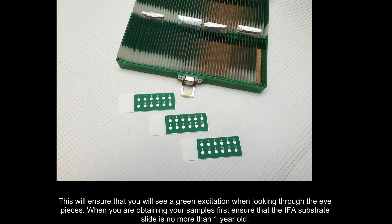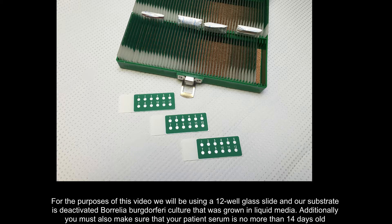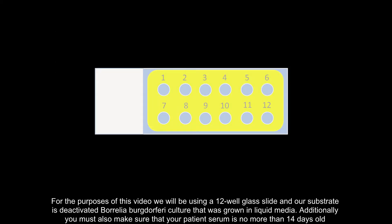When you are obtaining your samples, first ensure that the IFA substrate slide is no more than one year old. For the purposes of this video, we will be using a 12-well glass slide and our substrate is deactivated Borrelia burgdorferi culture that was grown in liquid media.